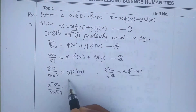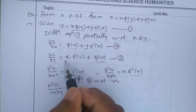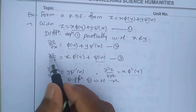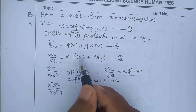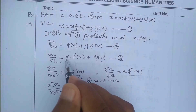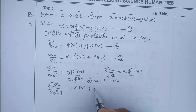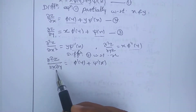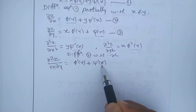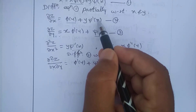To find ∂²z/∂x∂y, differentiate equation number three with respect to x. Differentiating ∂z/∂y with respect to x gives ∂²z/∂x∂y. We get φ'(y) as it is, and the derivative of x is 1, plus the derivative of ψ(x) with respect to x is ψ'(x). So we get ∂²z/∂x∂y = φ'(y) + ψ'(x) — call this equation number four. Equation two is in terms of ψ', and equation three is in terms of φ'.